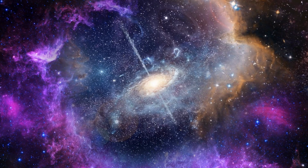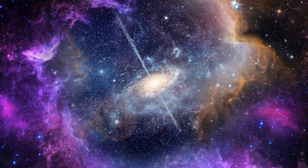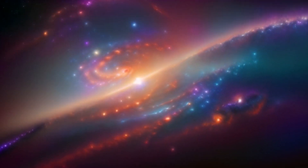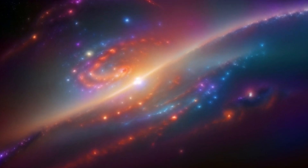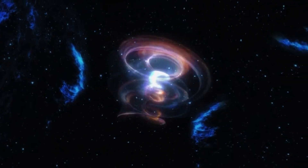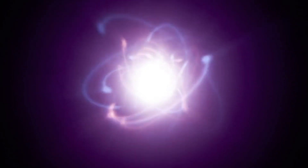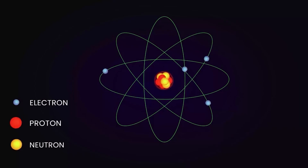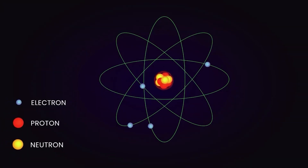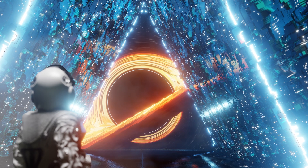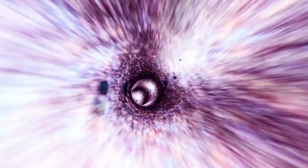In the distant future, the universe will progressively become quieter and darker until almost nothing happens. The fate of the universe depends on the rate at which matter decays. Over time, protons, neutrons, and electrons are predicted to break down into subatomic particles spontaneously. This process is expected to result in the disappearance of all ordinary matter in approximately 10 to the power of 40 years, leaving behind only black holes. After about 10 to the power of 100 years, even these black holes will vanish.